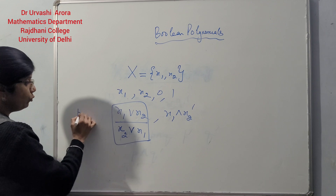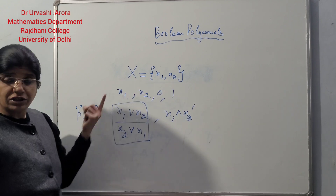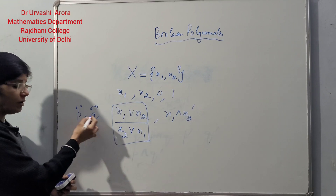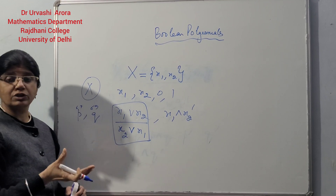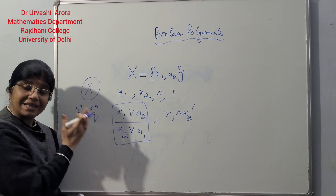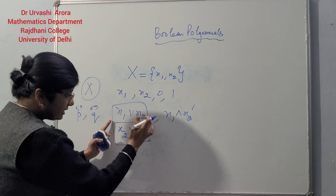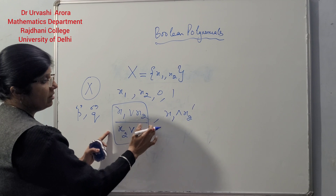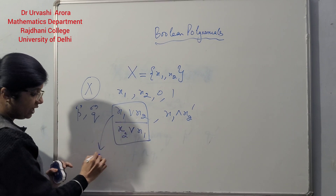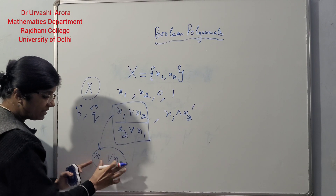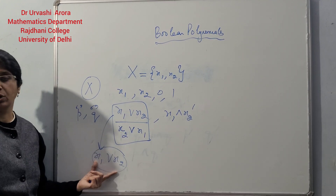In general — not just for the set of two symbols — if P and Q are Boolean polynomials over the set of n symbols, then these Boolean polynomials will be called equal if they are exactly the same character by character, or symbol by symbol. So as far as these two particular Boolean polynomials are concerned, they are not equal. x1 join x2 equals x1 join x2 — meaning they should be exactly the same character by character and symbol by symbol — only then can the polynomials be called equal.